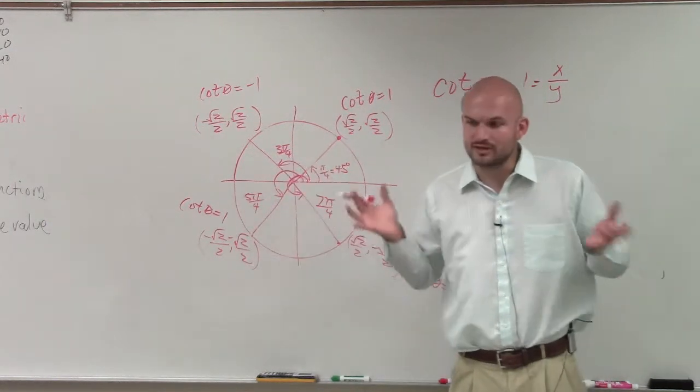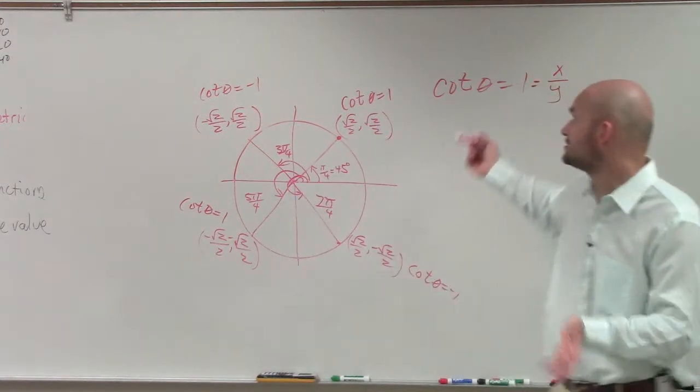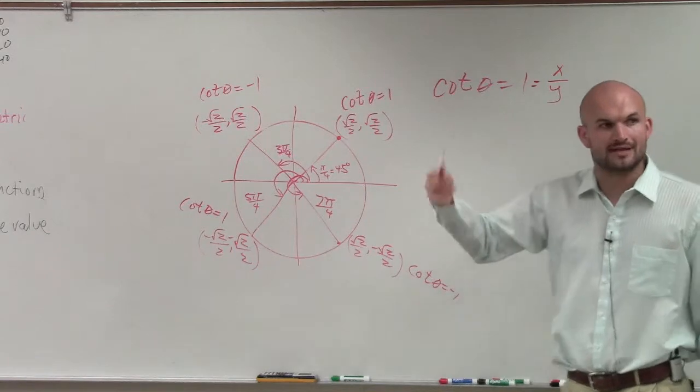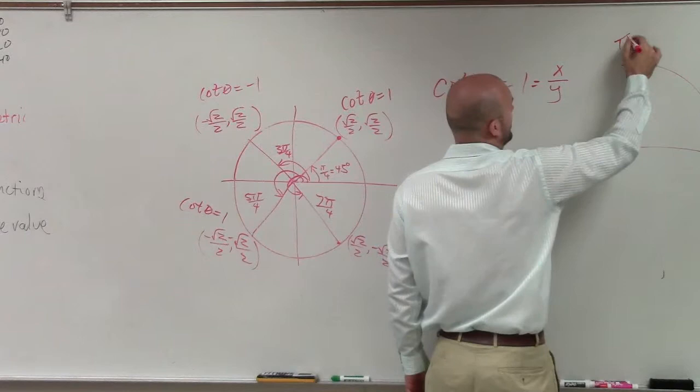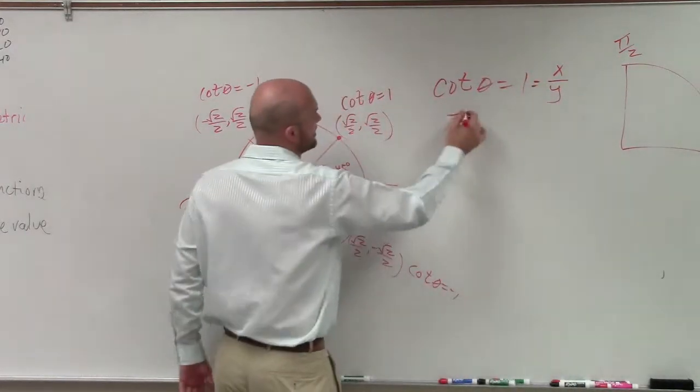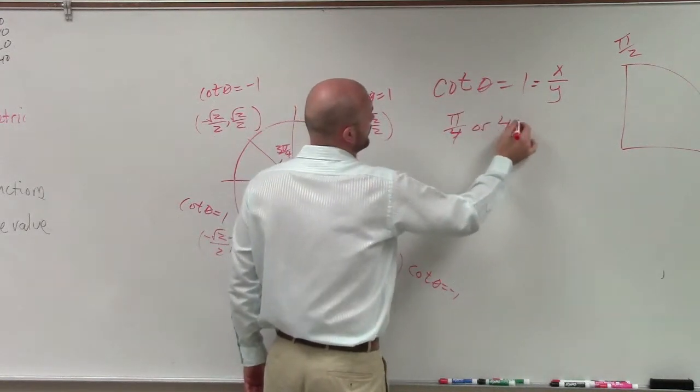But remember, there's a constraint. They say I only want you to find when the cotangent of theta is equal to 1 when it's between 0 and π over 2. So between 0 and π over 2 was only in the first quadrant. Therefore, my only angle is going to be π over 4, or 45 degrees.